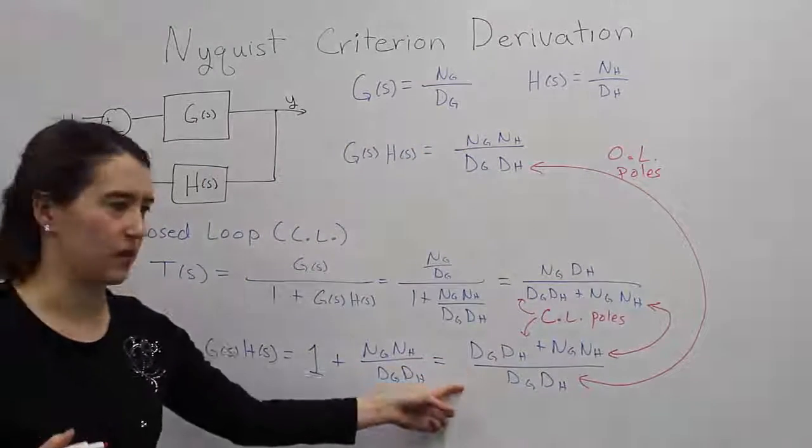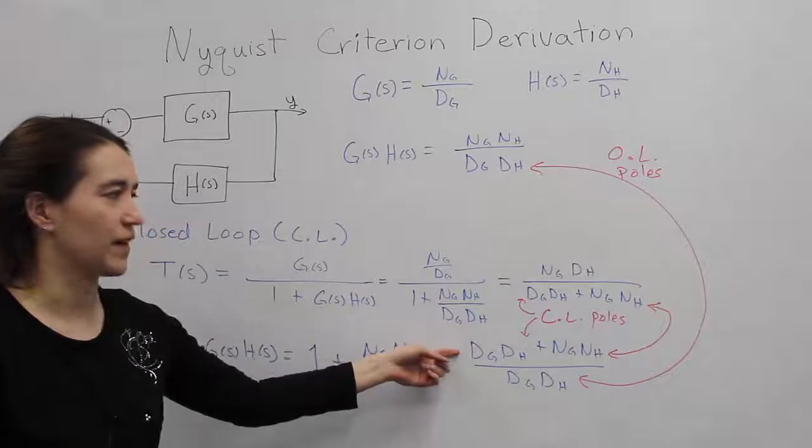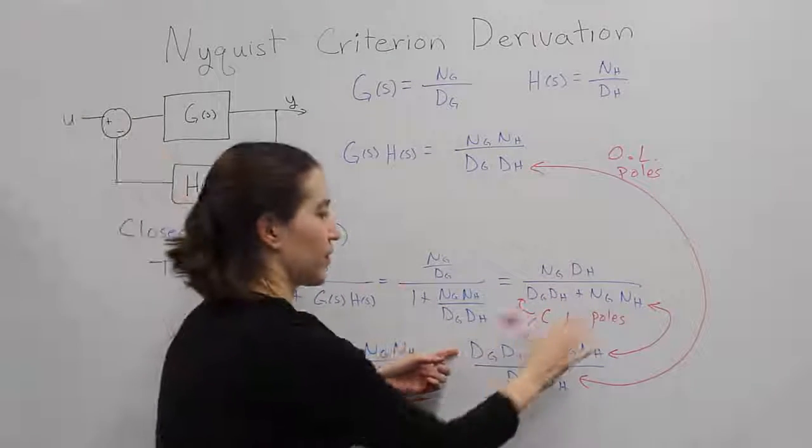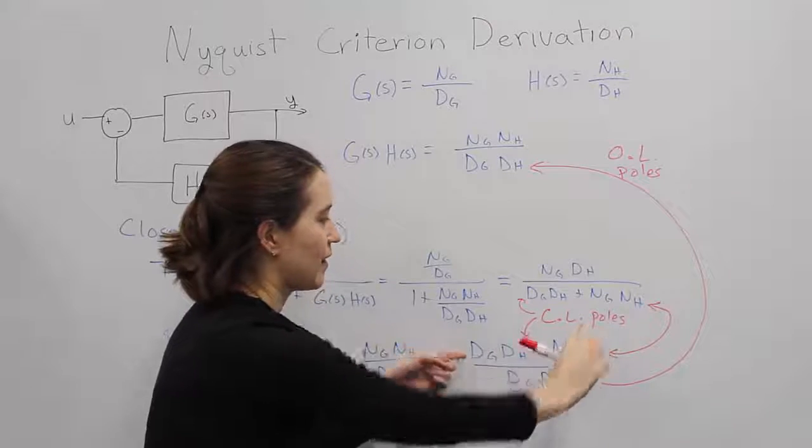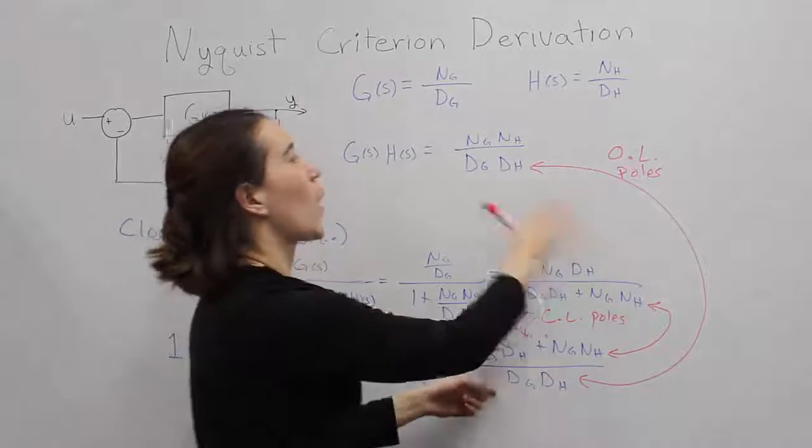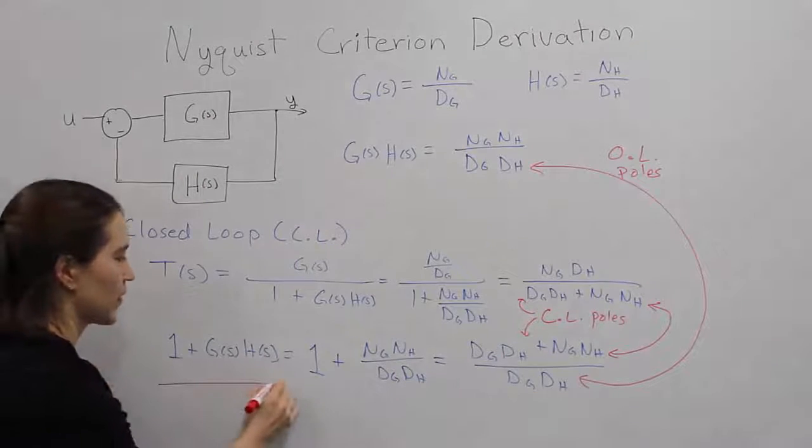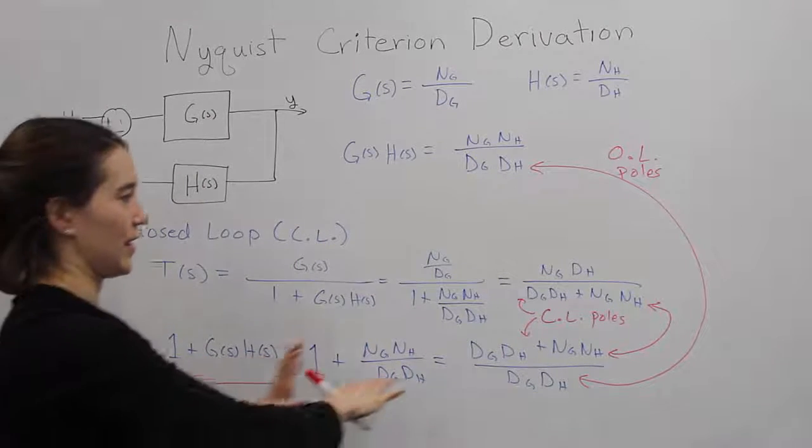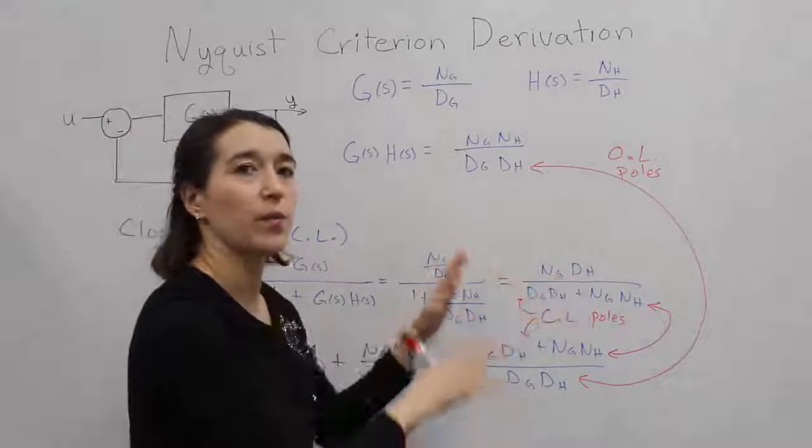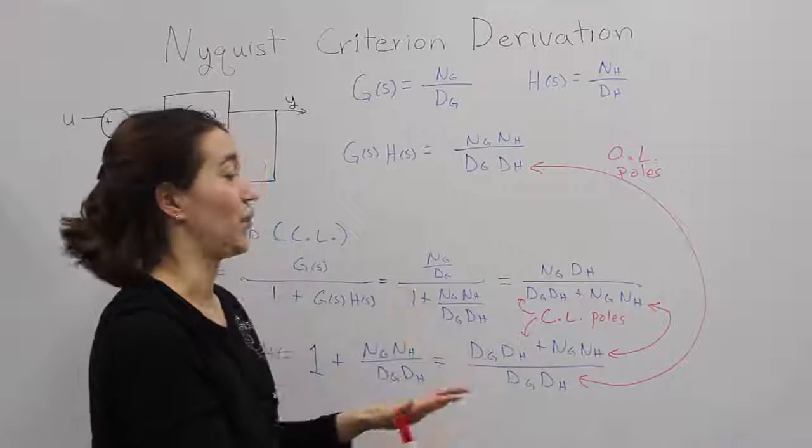So this one expression, in the numerator, we get the closed-loop poles, the same expression as that, and in the denominator, we get the expression for the open-loop poles. So this is the equation that's very important, and we are able to directly relate the open and closed-loop poles of our system.